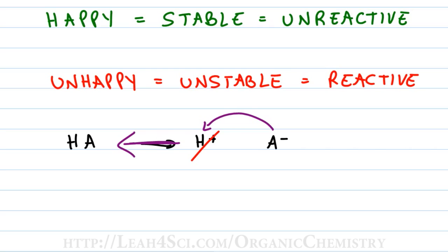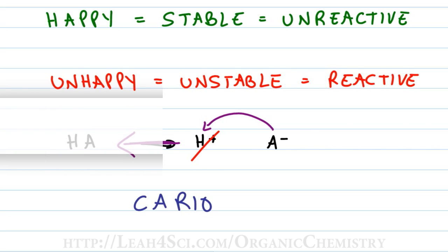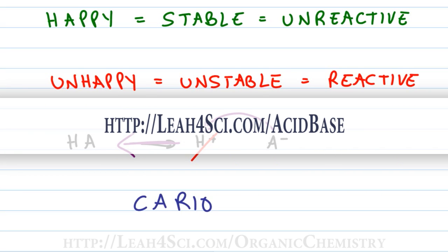A weak acid is something that, if it dissociates, is so unstable it wants to re-associate — it does not want to act as an acid. The A minus is unhappy and unstable and wants to reform HA. So what are we looking for when analyzing A minus? There are five things, and the mnemonic is CARIO: Charge, Atom holding the charge, Resonance, Inductive effect, and Orbitals. We'll discuss each of these in upcoming videos at leah4sci.com/acid-base.